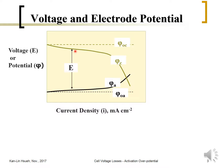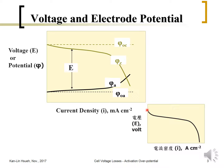At higher current density, the cathode potential would drop and the anode potential will rise. The difference between the cathode potential and anode potential is called the cell voltage. Ideally the voltage should remain constant at different current densities, but because of overpotential losses, the cell voltage drops.